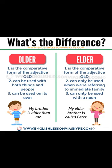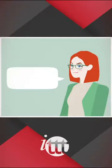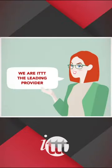When using 'elder,' it must always be followed by a noun. If you say 'my brother is elder than me,' that would be incorrect, as 'elder' is not immediately followed by a noun. A correct usage of 'elder' would be: 'my elder brother is two years older than me,' as 'elder' is directly followed by the noun 'brother.'